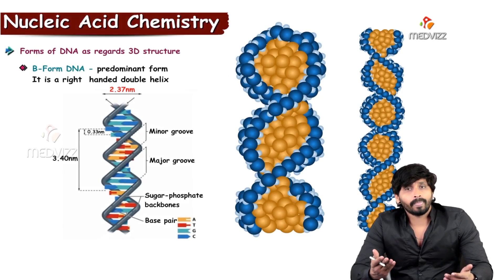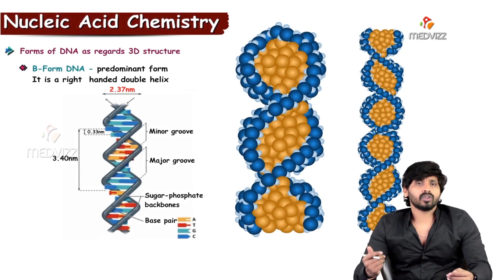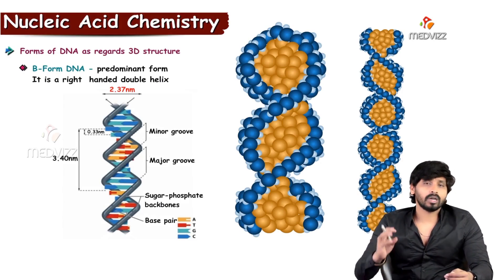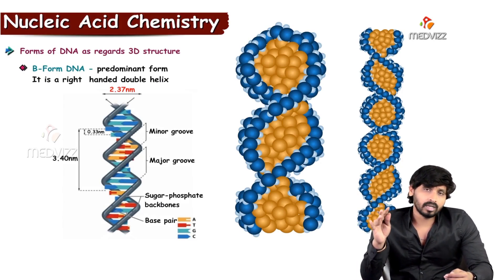Coming to the types of DNA, there are three types: one is B form, another is A form, and the other is Z form.